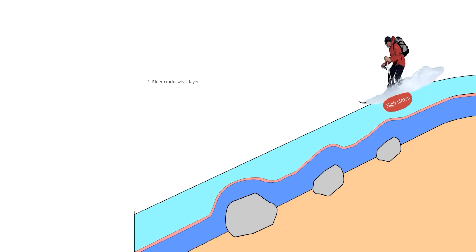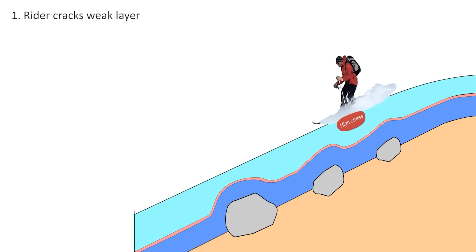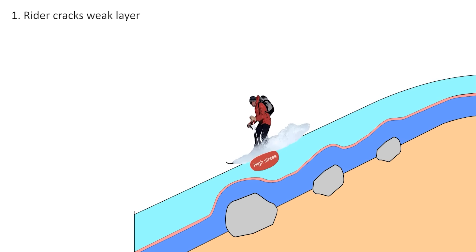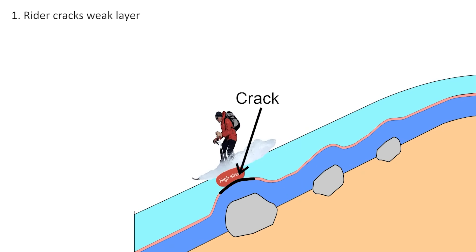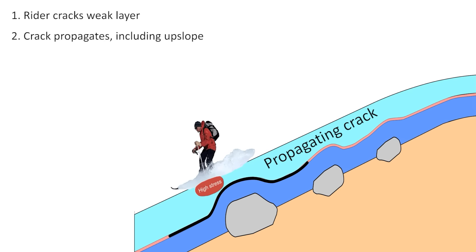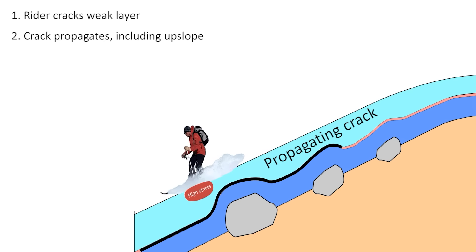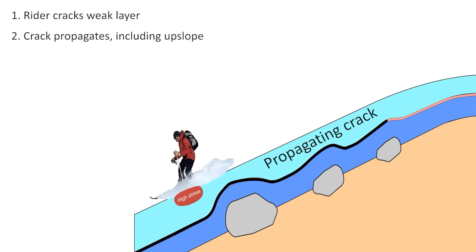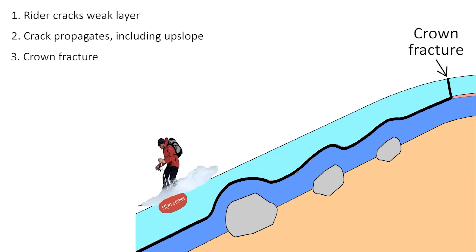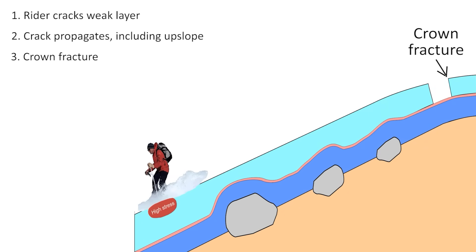Let's look at how these features can affect the following stages of rider-triggered slab avalanches. One, the skier starts a crack in the weak layer under the slab. If the crack is long enough, two, it propagates outwards, including upslope from the trigger point. Three, at some point — sometimes on the convexity — the crown fractures and the slab slides downslope.